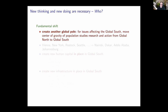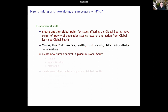We should take the activities familiar in Vienna, New York, Rostock, Seattle, and other places, and increasingly do those things in Nairobi, Dakar, Addis Ababa, Johannesburg, maybe Buenos Aires. This really requires that we create new human capital in the global south. The way to do this is to do it in place in the global south — to reverse the tradition of bringing people from the global south to train in the global north and then hoping they go home and can function there.